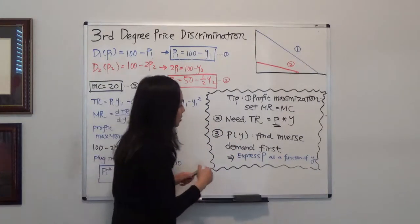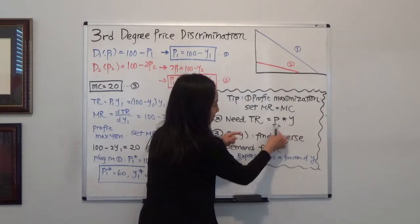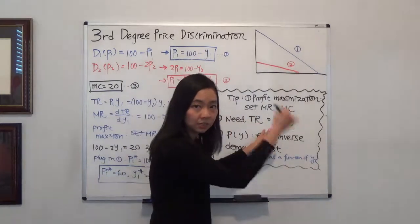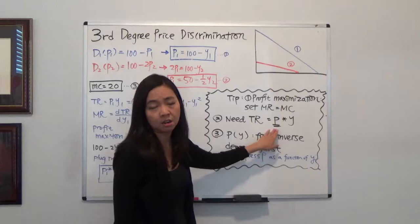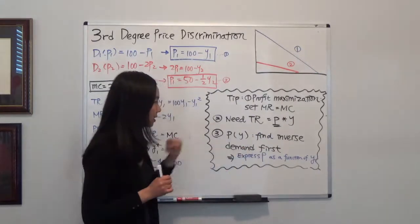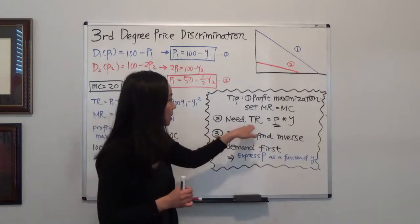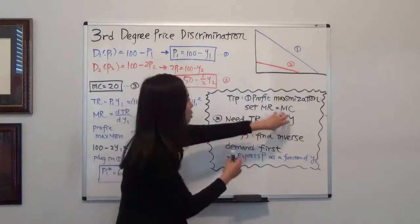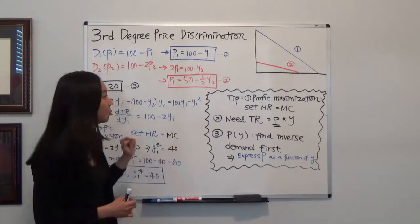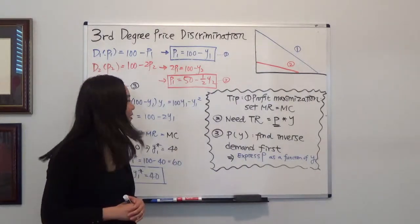We find inverse demand because when taking the derivative of total revenue with respect to quantity, we want everything expressed as a function of quantity — no price terms. For a monopoly, since the demand curve is negatively sloped, price is a function of quantity, and expressing it this way avoids the chain rule. So the first step is always to find inverse demand and express price as a function of quantity. I hope this tip helps you solve problems in the exam. I hope this helps and I will see you next time.